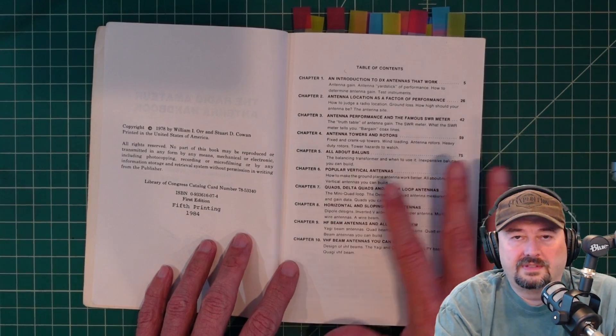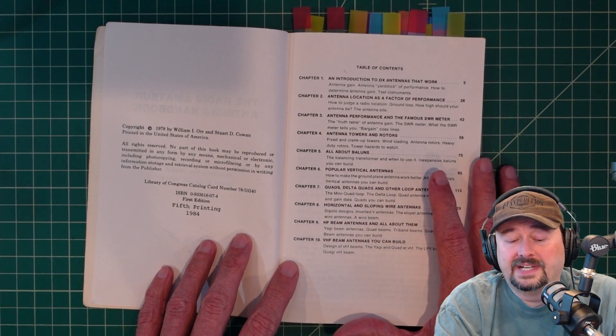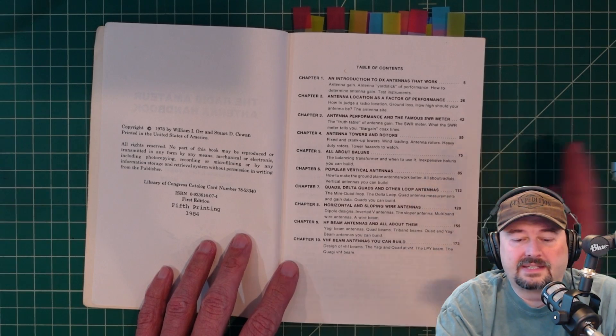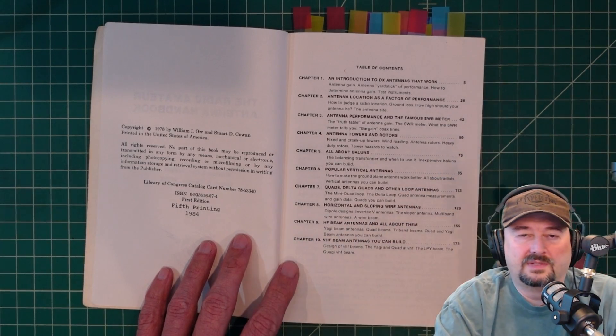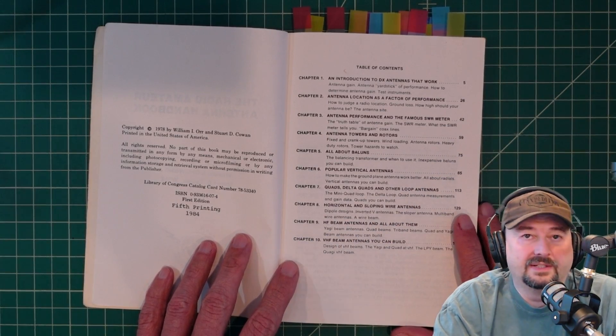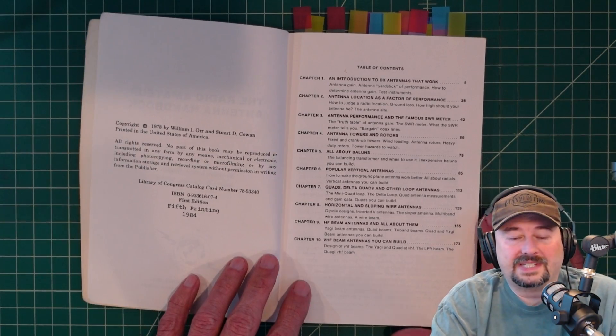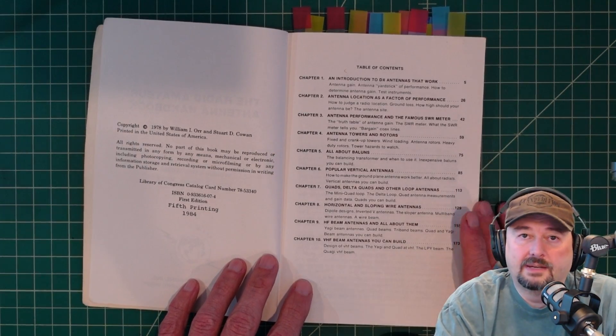So most of the information in this book is perfectly fine and valid, but every now and then you'll come across something that doesn't quite make sense or it'll suggest using equipment that hams typically don't use any longer.